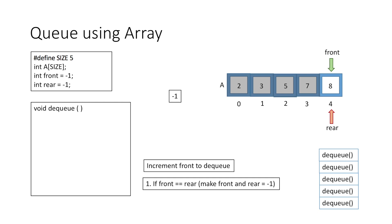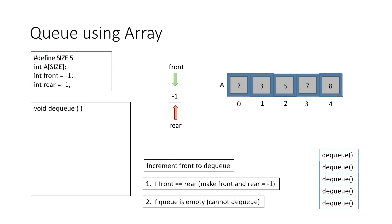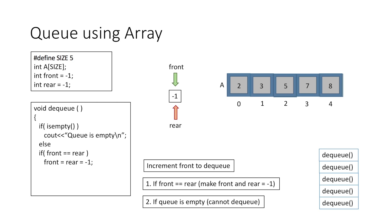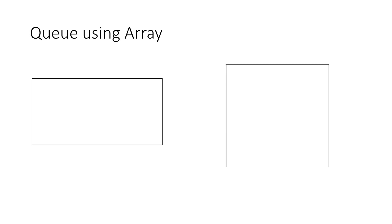The condition for an empty queue is that front and rear both have the value -1. So when removing the last element, we make front and rear equal to -1. Another case is when the queue is empty we cannot perform a dequeue operation. So in our dequeue function, first we check if the queue is empty, and if so we cannot dequeue. Else we check if the element we are removing is the only element, that is front equals rear, in which case we set both front and rear to -1. Otherwise we simply increment front to dequeue the element.